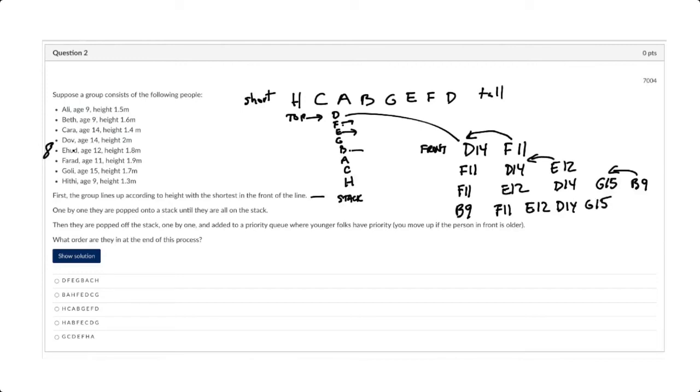And then Allie comes along, and Allie is 9. So Allie is 9, comes to the back. But Allie gets to move up, up, up, up, up, but doesn't get to go in the first place because she's not younger. So now I have two 9-year-olds in the front.